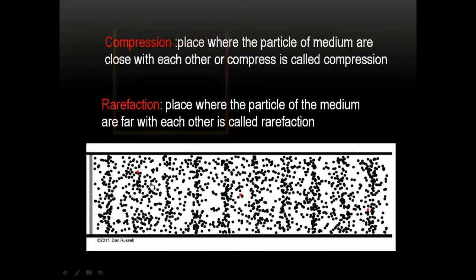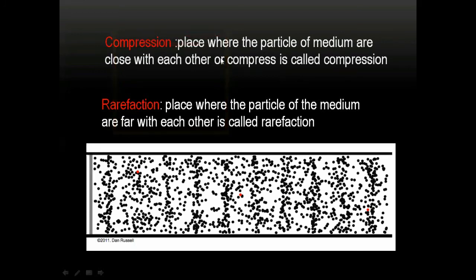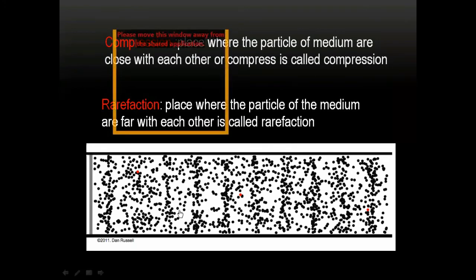In longitudinal waves, a continuously alternating pattern of compression and rarefaction is formed, through which the disturbance — or sound — is transferred from one place to another. Compression is where particles of the medium are close together; rarefaction is where particles are far apart. This is the wave motion by which longitudinal waves travel from one point to another.